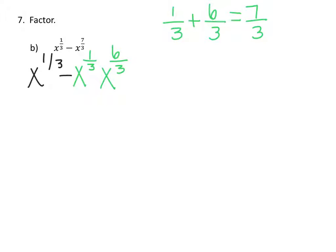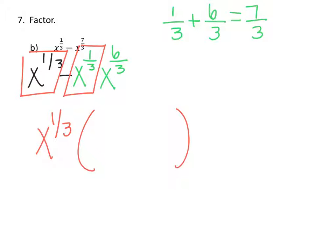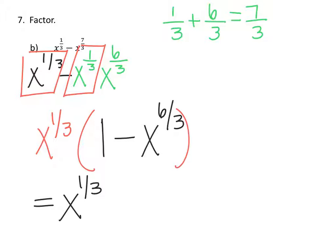Now I can factor out x to the one-third. Factoring it from the first term leaves just 1, because x to the one-third times 1 gives my original x to the one-third. Factoring from the second term leaves minus x to the six-thirds. Since six divided by three is 2, my answer is x to the one-third times one minus x squared.